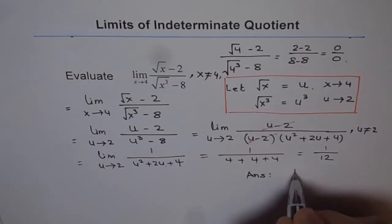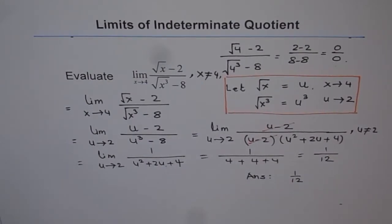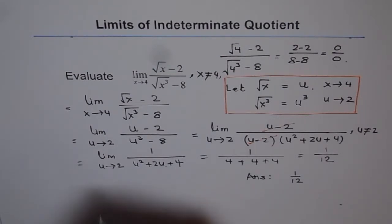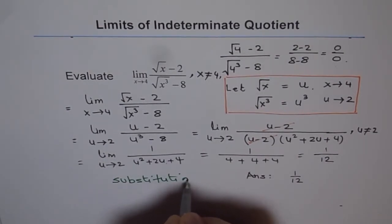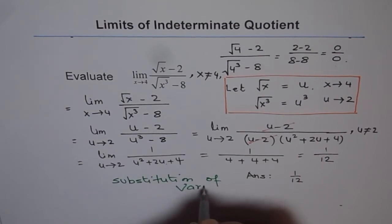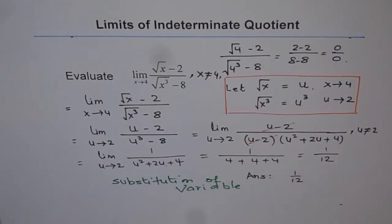So our answer is 1 over 12. That is how we can solve such functions with radicals by substitution. Remember, a very important tool which we are discussing here is substitution of variable. We substituted one variable with the other, which helped us to simplify the problem and determine the limit. I hope you appreciate it. Thank you.